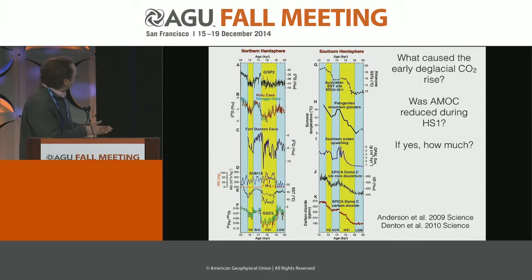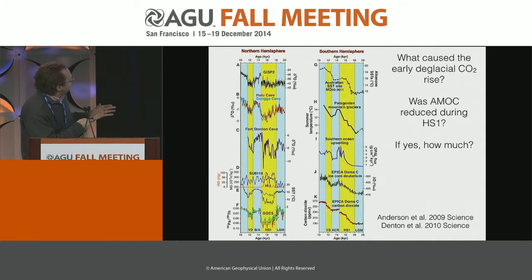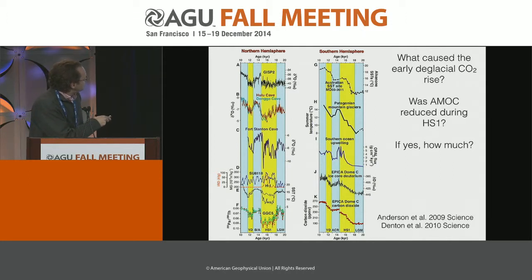There's also some controversy on this record, so it's not clear if you can quantify AMOC changes from just a few of these protactinium-thorium records. So one issue I'm addressing here is: was the AMOC reduced during Heinrich Stadial 1, and if yes, how much? And then, how is that related to this early deglacial CO2 rise?